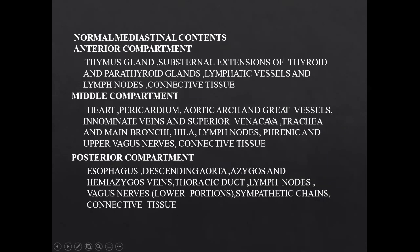Normal mediastinal contents. The anterior compartment consists of the thymus gland, substernal extension of thyroid and parathyroid glands, lymphatic vessels and lymph nodes, and connective tissue. The middle compartment consists of the heart, pericardium, aortic arch and great vessels, innominate veins and superior vena cava, trachea and main bronchi, lymph nodes, phrenic and upper vagus nerves, and connective tissue.